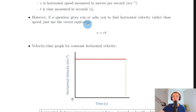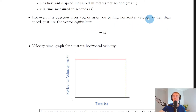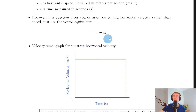However, if a question gives you or asks you to find horizontal velocity rather than speed, we just use the vector equivalent, because velocity is the vector equivalent of speed. So instead of distance, speed and time, we would use displacement s, velocity v and time t, where s is the horizontal displacement, v is the horizontal velocity, and t is the time.